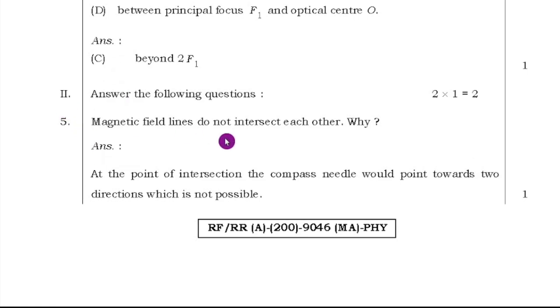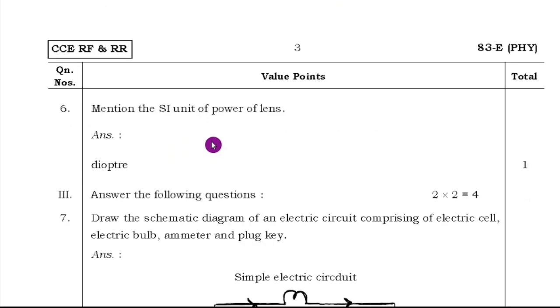And second main, two questions will be there. Each question carries one mark. Fifth question, magnetic field lines do not intersect each other. Because at the point of intersection, the compass needle would point towards two directions, which is not possible.